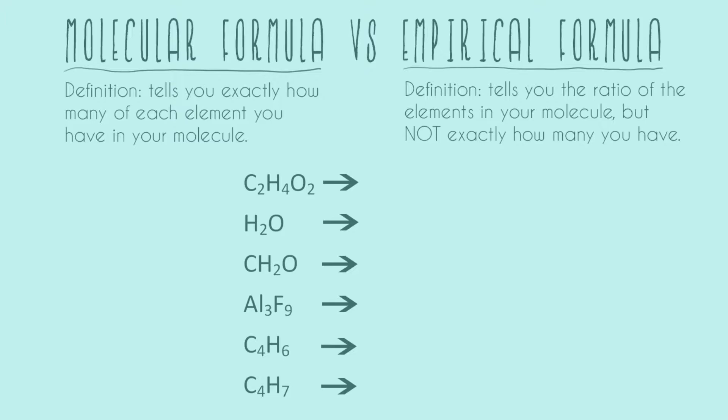So molecular formula is basically what you're used to in class. It's the thing that you're going to see the most when you see these elements written like this with their atomic symbols and a little subscript. And the definition is that it's telling you exactly how many of each element you have in your molecule. So when we look at this first example, we look at C2H4O2, we know that that molecule 100% has two carbons, it has four hydrogens, and it has two oxygens. That's what the molecular formula is trying to tell us.